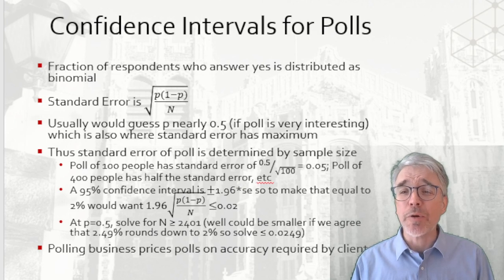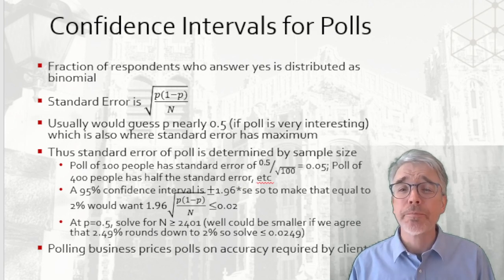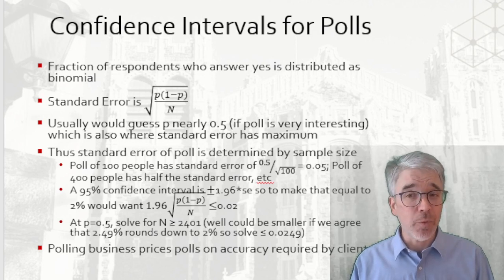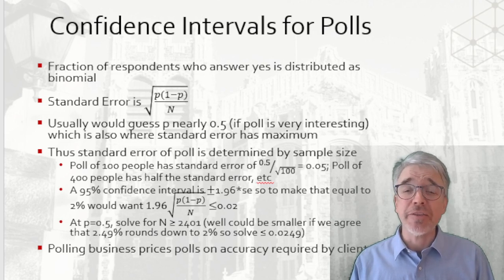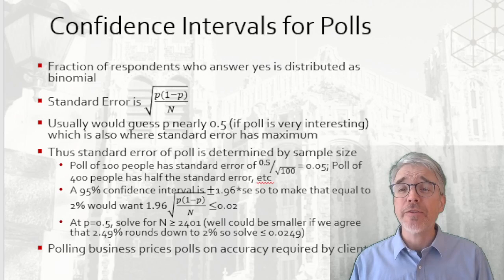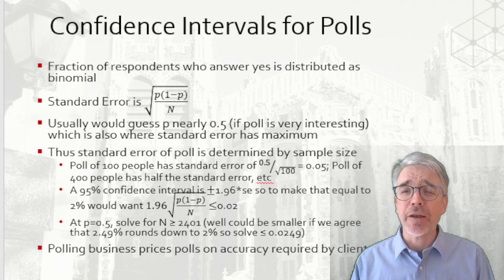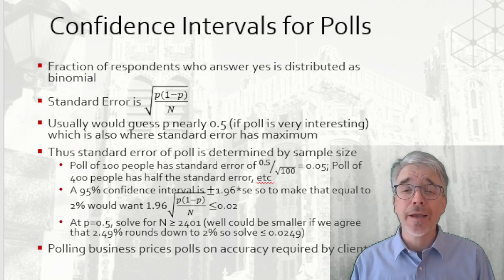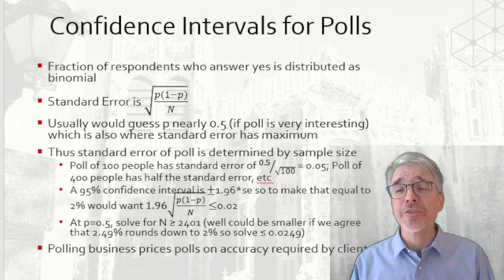One of the places where ordinary people most commonly see confidence intervals is in polling. Support for some policy or politician is given as a level with a confidence interval plus or minus like two percentage points. Now we can figure out where they're getting that confidence interval. It's actually easy, since the fraction of respondents who answer yes, p, is distributed binomial. So the standard error is the square root of p times 1 minus p divided by n. Typically p is going to be near 50% because most polls are looking at controversial issues.